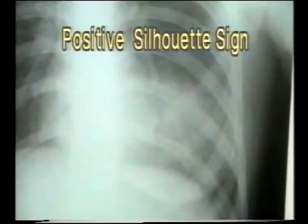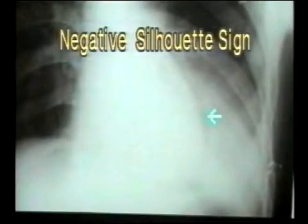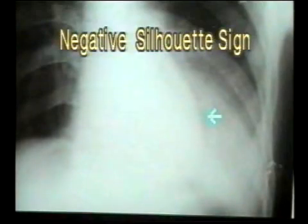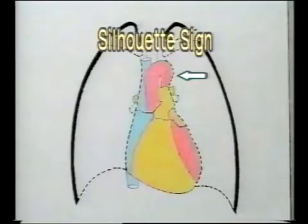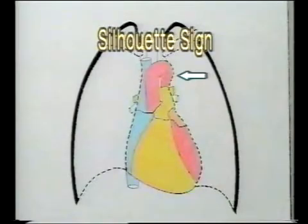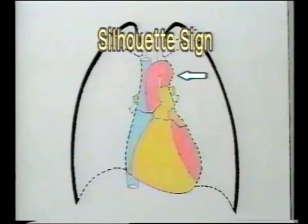The heart border in this area is an anterior structure, so the consolidation is anterior, i.e., in the lingular lobe. While in this other consolidation, the heart border is not obliterated, i.e., a negative silhouette sign, so the consolidation is posterior, i.e., in the left lower lobe. Applying this principle, if a consolidation of the left upper lobe obliterates the aortic knuckle, which is a posterior structure, then it is in the apico-posterior segment. If it does not obliterate it, then it is in the apico-anterior segment.